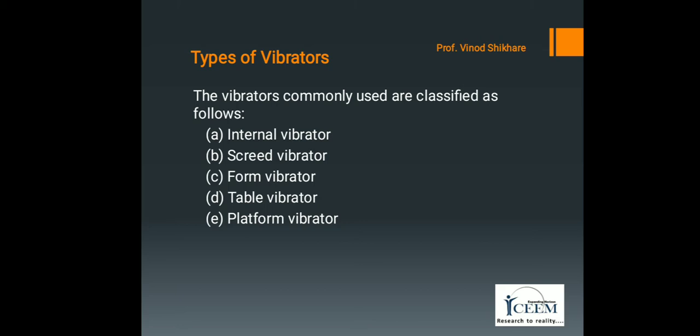The next type is the platform vibrator. It is nothing but a table vibrator larger in size. Sometimes the platform vibrator is also coupled with jerking or shock-giving arrangements so that thorough compression is given to the concrete. Platform vibrators are used in the manufacture of large prefabricated concrete elements such as railway sleepers, prefabricated roofing elements, electric poles, etc.